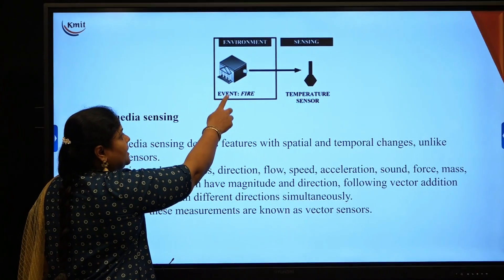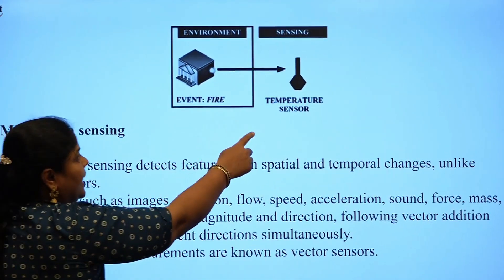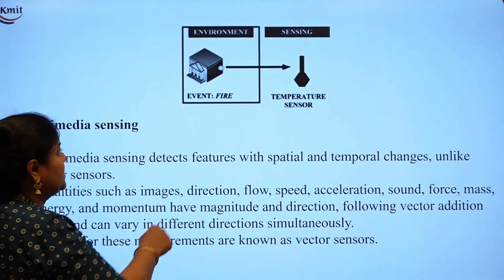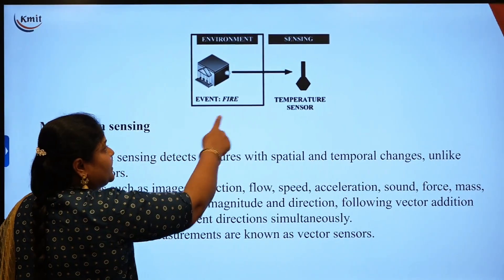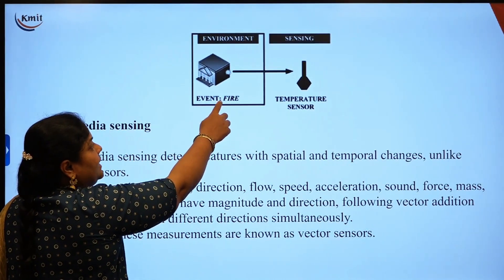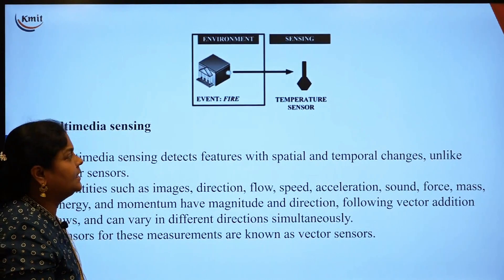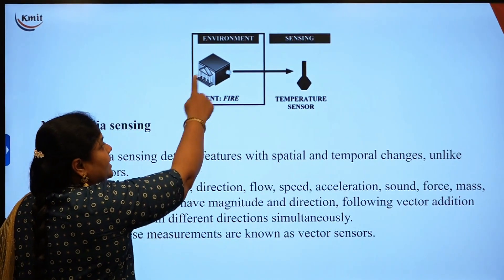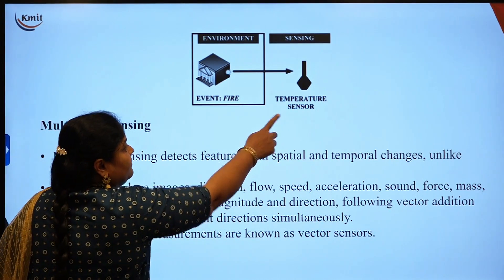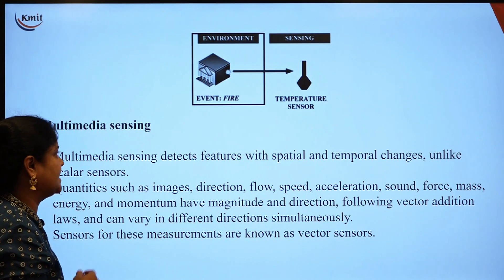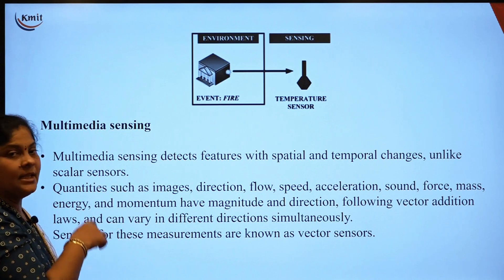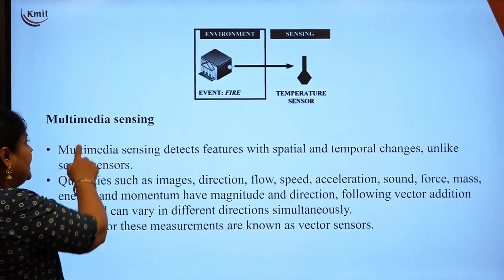An example of scalar sensing: consider an environment with a temperature sensor to detect fire. The temperature sensor continuously senses the temperature of the environment. If a fire occurs, there will be an increase in temperature — the changes in values in that environment are sensed by the sensor. Scalar sensing measures changes in a particular environment over time.